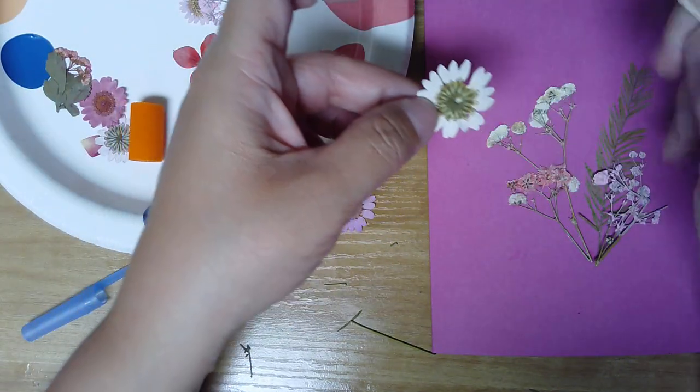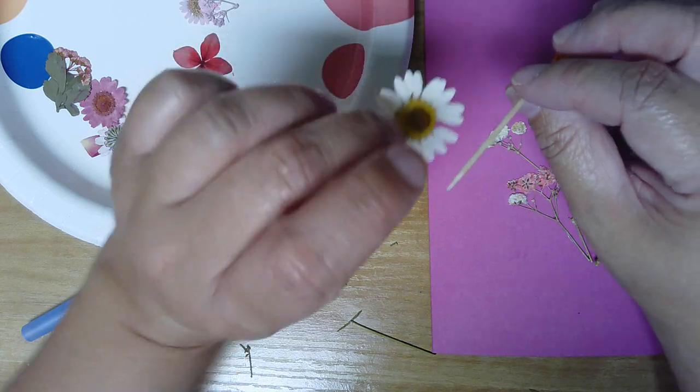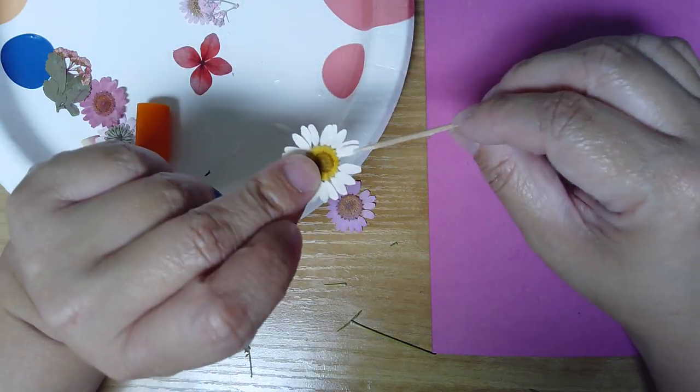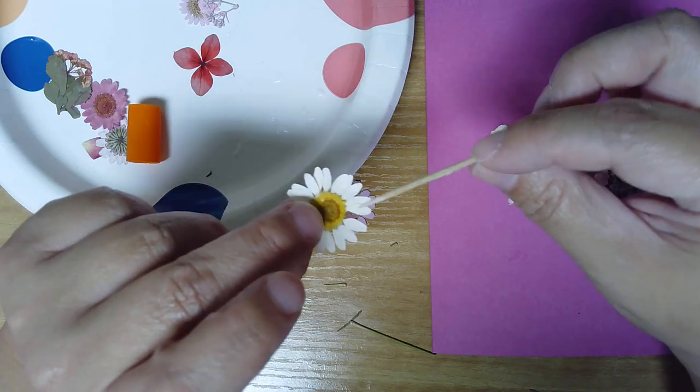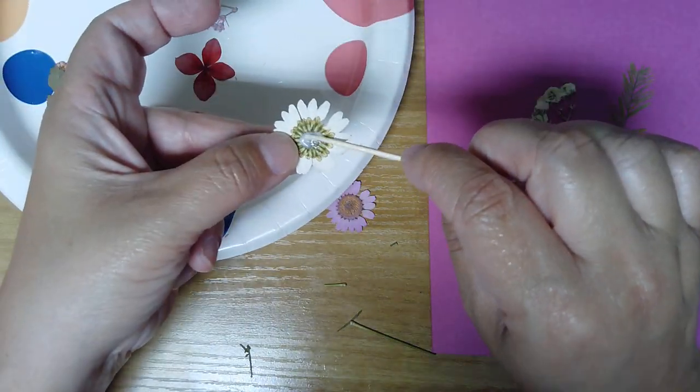Alright, so for this one, it's got a thicker center, so that's where I want to put all my glue. Like I was saying earlier, if you glue the backside of the petals, sometimes you'll see a shadow of the glue through the front, so I'm going to put my glue in the center.